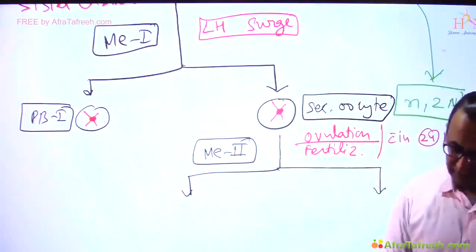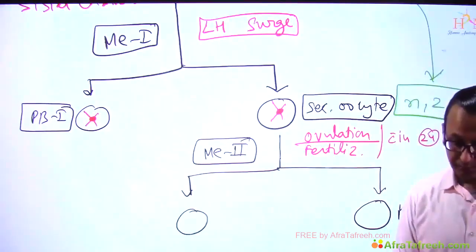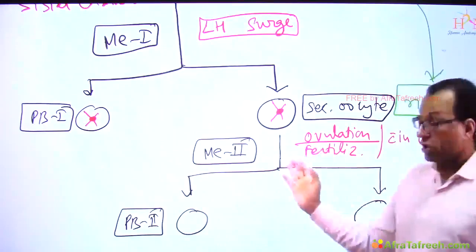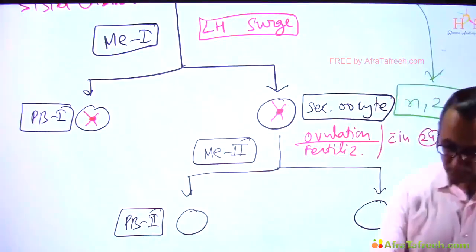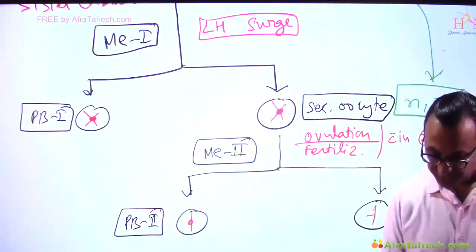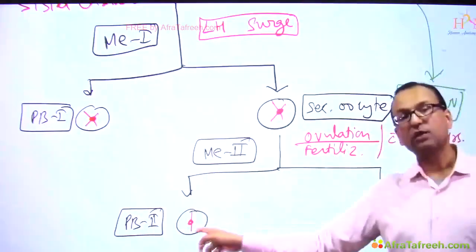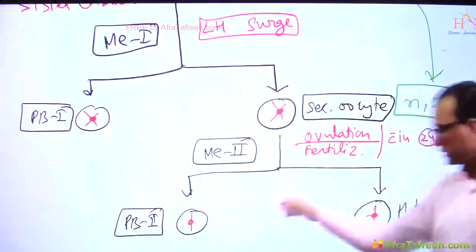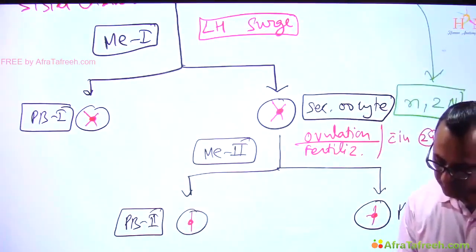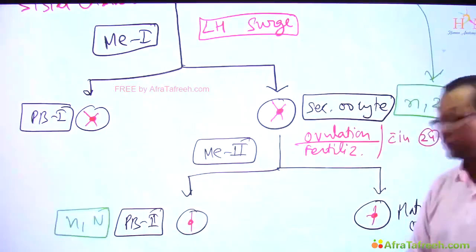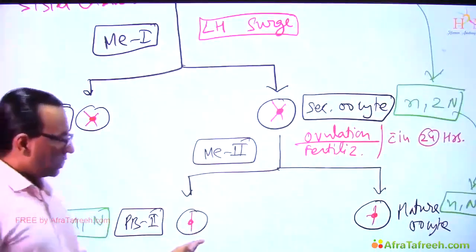If fertilization occurs, what we get next is the mature oocyte along with the second polar body. This is meiosis II where the sister chromatids are going to separate. The sister chromatids have now separated, and this remains a haploid cell but with only one unit of DNA. So finally we have n and N — 2N has become n — and these are haploid cells with one unit of DNA.